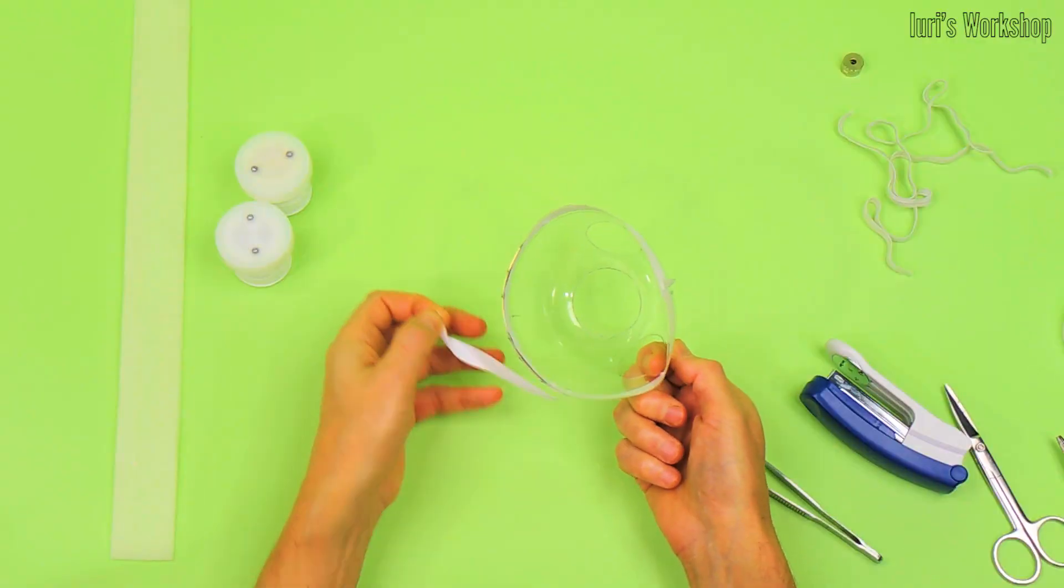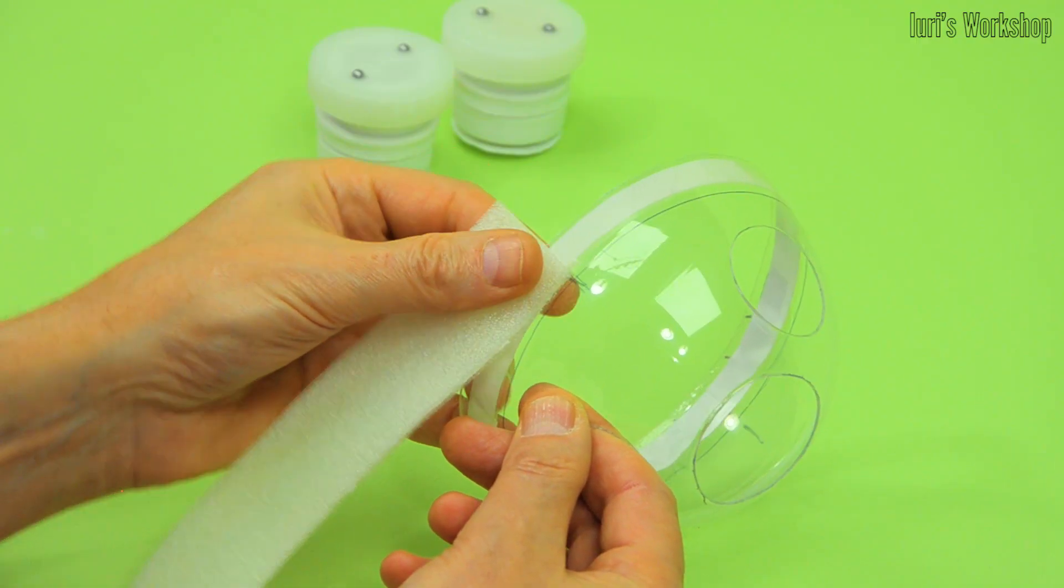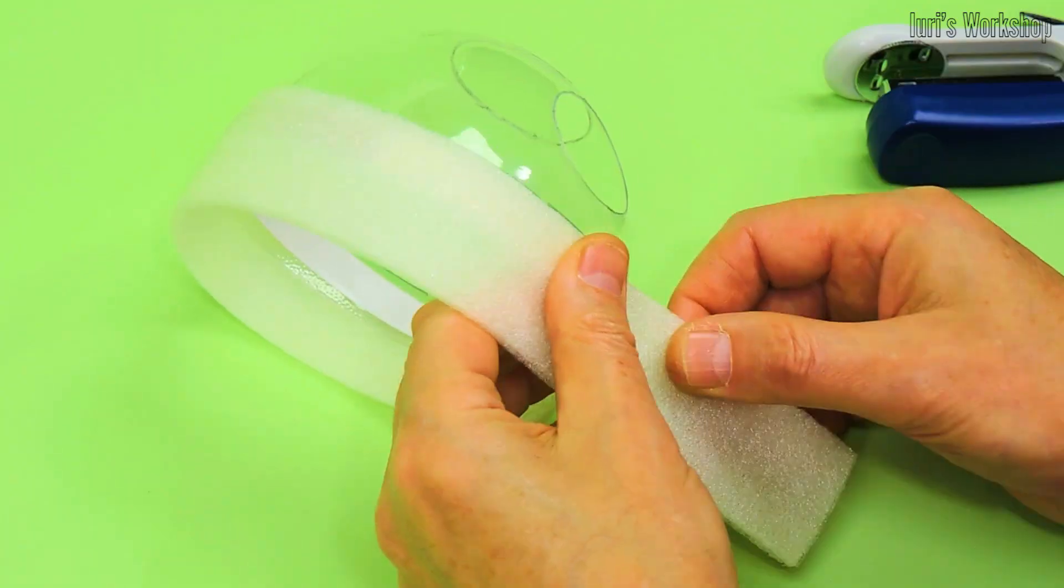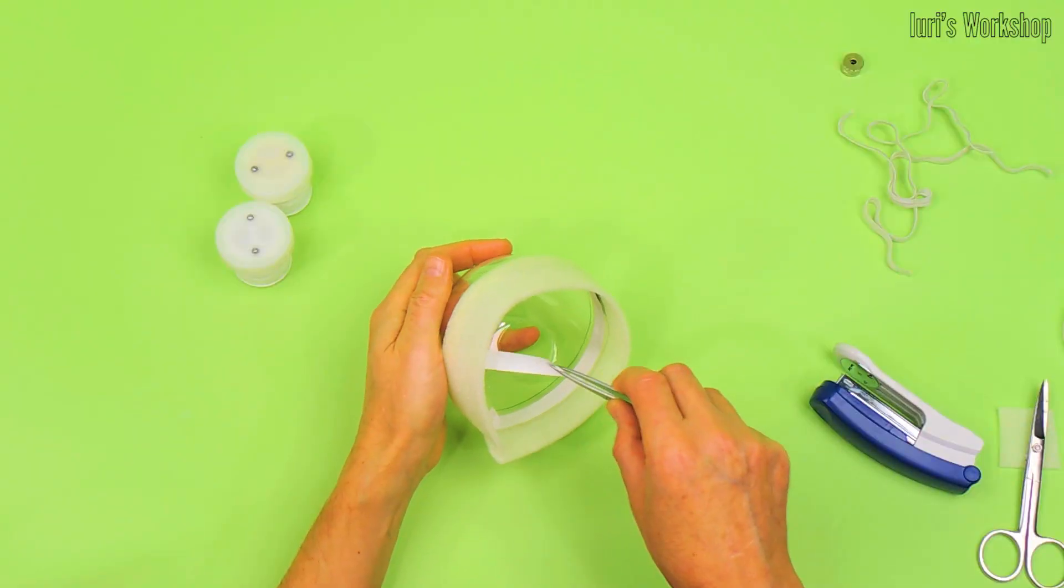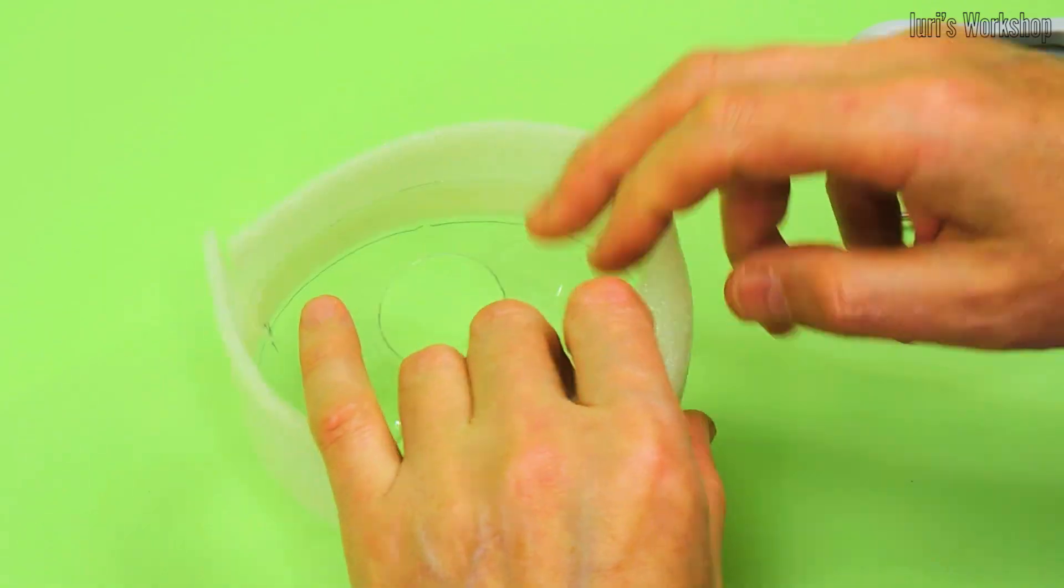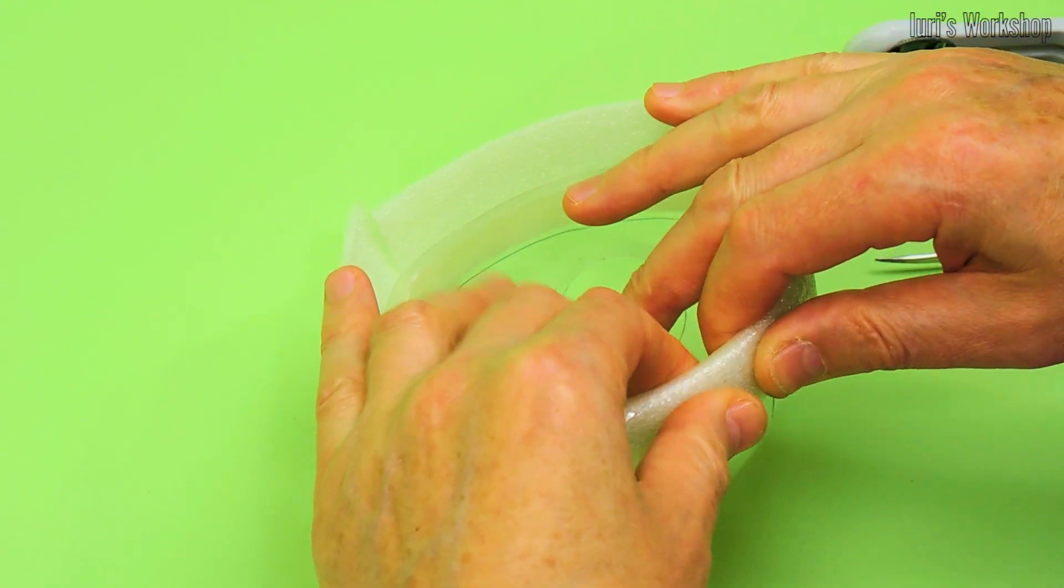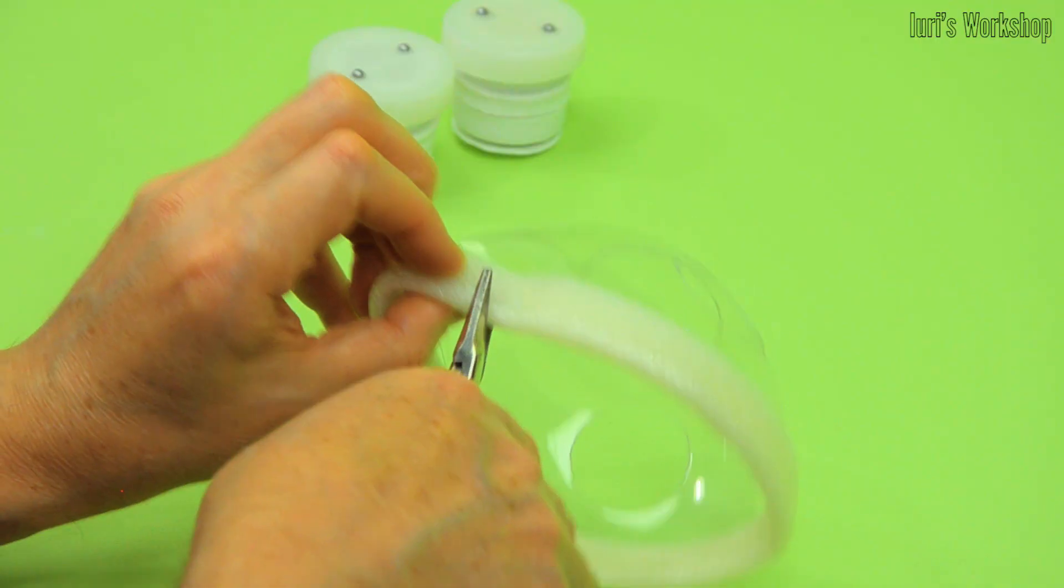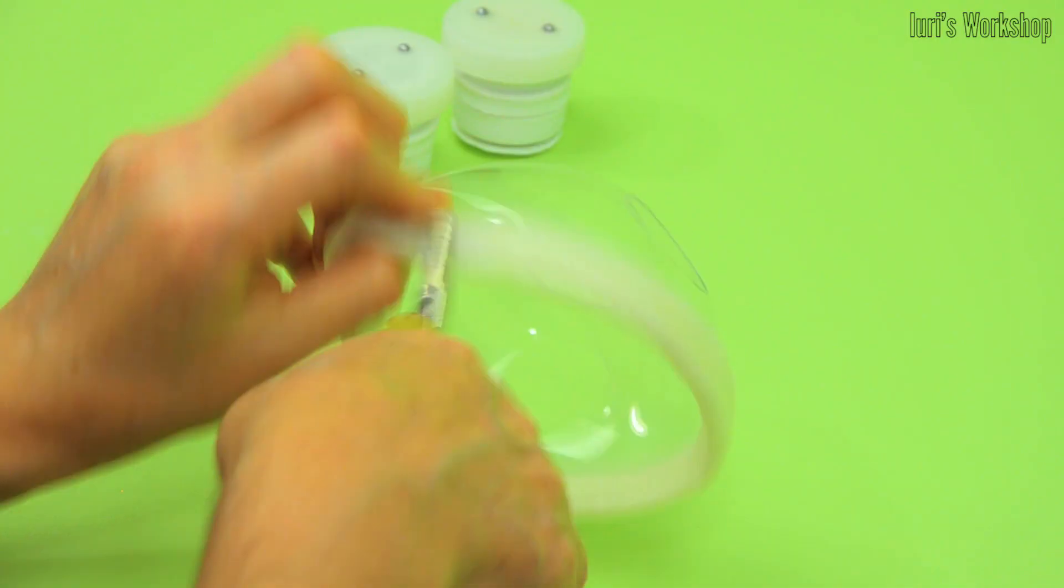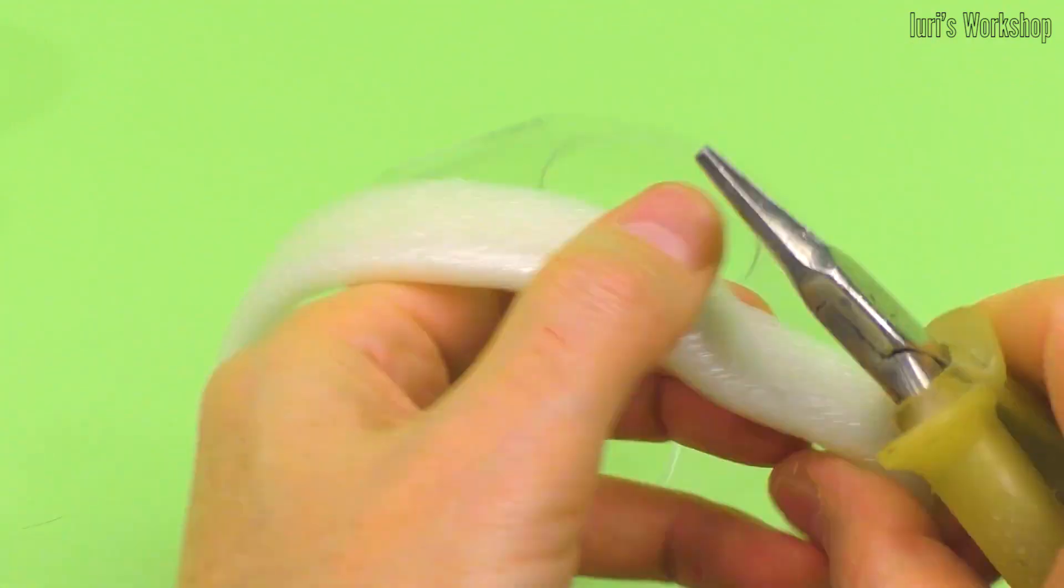This elastic pad ensures a secure fit of the respirator body to the face. It is necessary to cut off the gasket with a certain margin so that a gap does not form at the junction. You can adjust the shape of the respirator in the same way as the shape of a regular face shield.